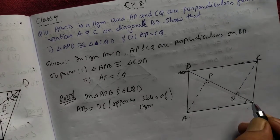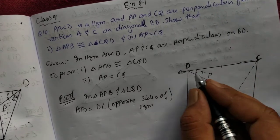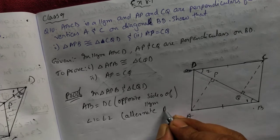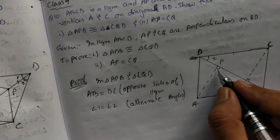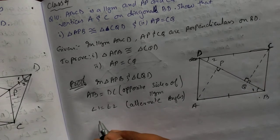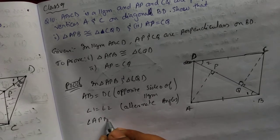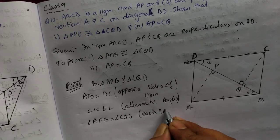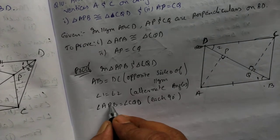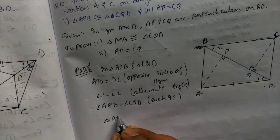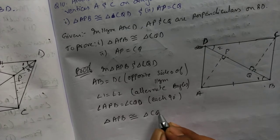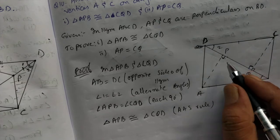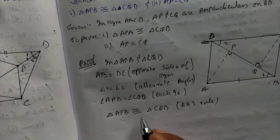Second point: these two angles will be same. I'll mark angle 1 equal to angle 2. This is alternate angles. Third point: each angle is 90 degrees — perpendicular means it falls at 90 degrees. We can write angle APB equal to angle CQD. So we got three points, that means the triangle is congruent. Triangle APB is congruent to triangle CQD by AAS rule — we are using two angles and the other side.